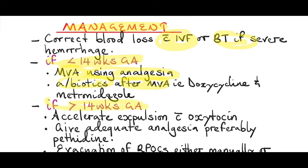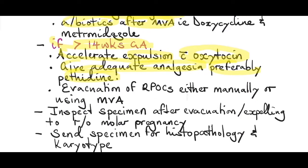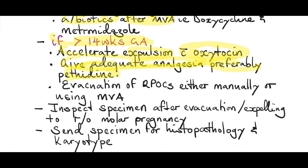If the pregnancy was more than 14 weeks gestational age, they are more likely going to have a complete expulsion, but you accelerate the expulsion with an oxytocin infusion. Give adequate analgesia - preferably pethidine - remember that the patient is having a miscarriage and has already lost a fetus. After expulsion, you can help evacuate the retained products of conception either manually or using a manual vacuum aspiration. Inspect the specimen to rule out a molar pregnancy.